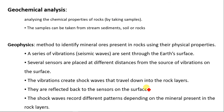Geochemical analysis is another method for searching for minerals. It involves analyzing the chemical properties of rocks by taking samples — these samples can be taken from stream sediment, soil, or rocks. By analyzing the chemical properties, you can determine whether minerals are present. Geophysics is also a method used to identify mineral deposits present in rock using their physical properties.